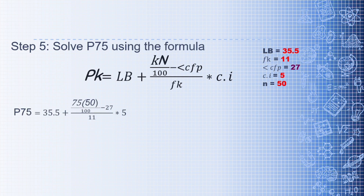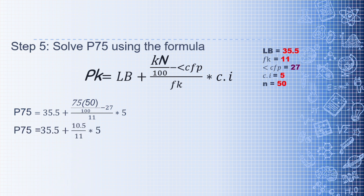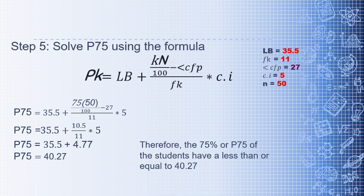Substituting into the formula: P75 = 35.5 + ((75 × 50/100 − 27) / 11) × 5. Computing: 75 × 50 = 3,750 / 100 = 37.5, then 37.5 − 27 = 10.5, then 10.5/11 = 0.95, then 0.95 × 5 = 4.77, and finally 35.5 + 4.77 = 40.27. Therefore, the 75th percentile (P75) means that 75% of the students have a score less than or equal to 40.27.